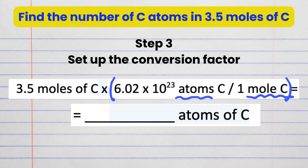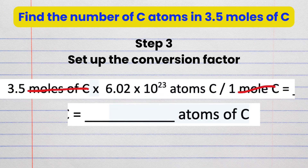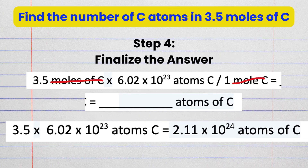Step 3: set up the conversion factor. The conversion factor will have moles in the denominator and atoms in the numerator, so it will be 6.02 times 10 to the 23 atoms of carbon divided by one mole of carbon. We can cross out the moles of carbon from the numerator and denominator, and we get our result in atoms. Step 4: finalize the answer — 3.5 times 6.02 times 10 to the 23 atoms of carbon equals 2.11 times 10 to the 24 atoms of carbon.